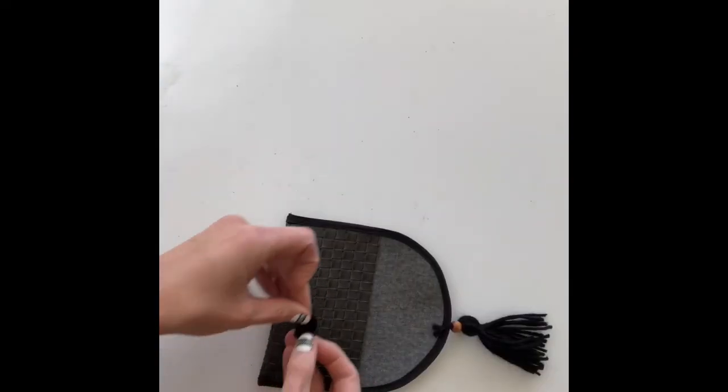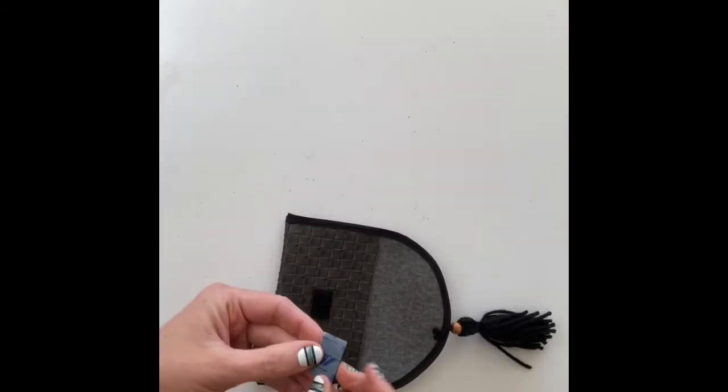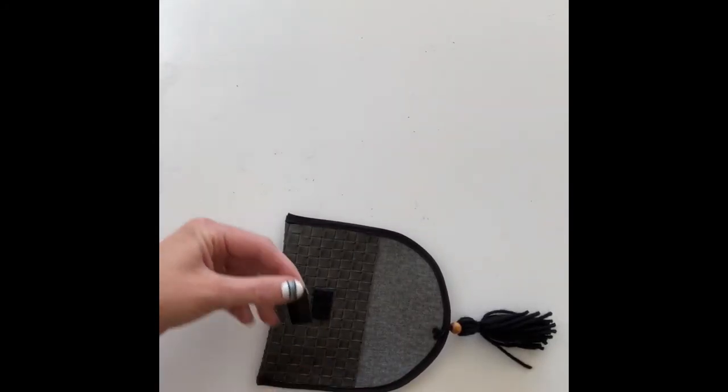For the closure, we'll just be using some sticky velcro tape. So peel off the sides and just stick it to the inside flap and the outside pocket.